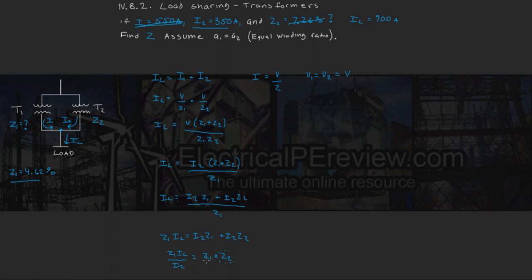We're going to set it equal to Z2, so that Z2 equals Z1 IL over I2 minus Z1.